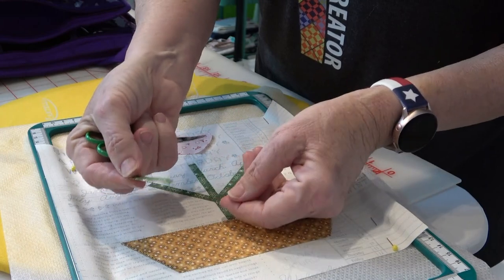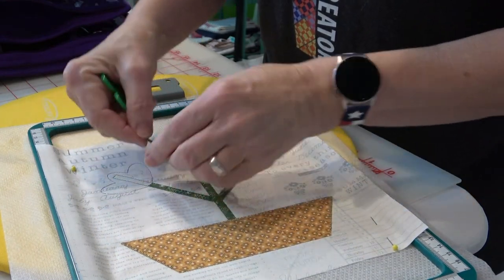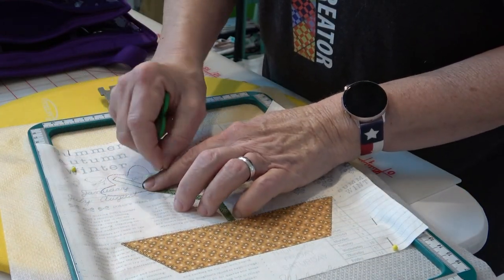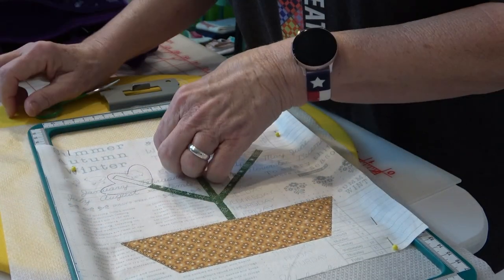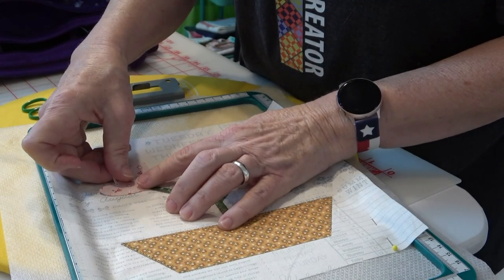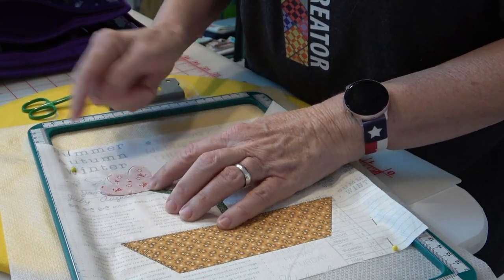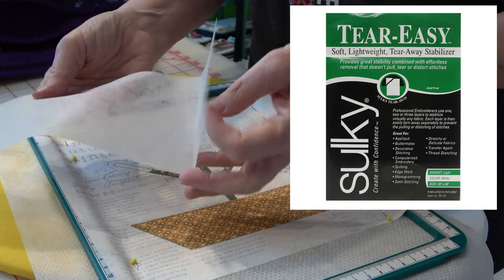...I went ahead and just took a little pair of scissors. Because this had not been tacked down with the blanket stitch, I was able to just pull it up from the adhesive and I trimmed this off. But I can still see the thread through here. Maybe you can't, but I can see the thread. This is Sulky's Tear Easy and it's pretty sheer.